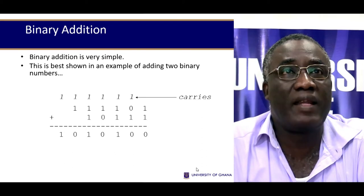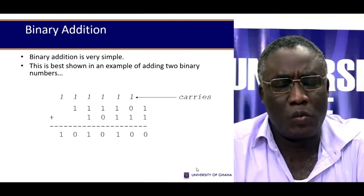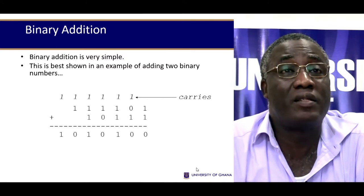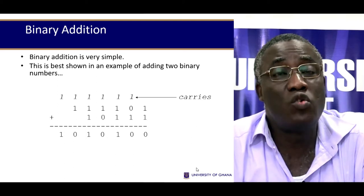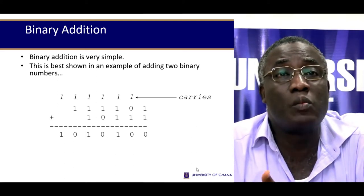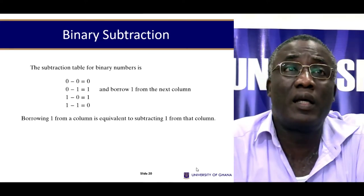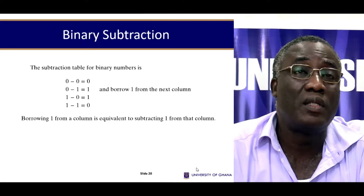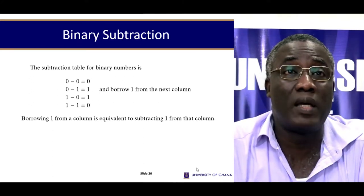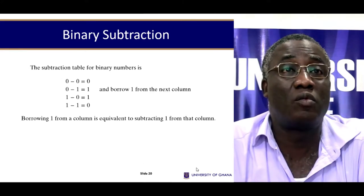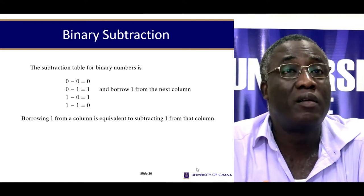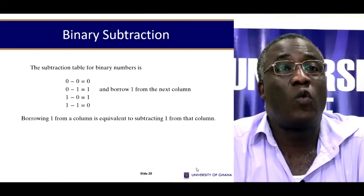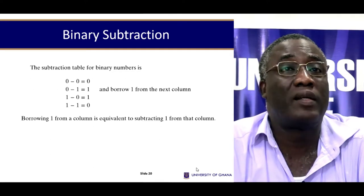This is how binary addition works — and it's important because this is exactly how the computer does its own additions. To program a computer and understand what it's doing, you need to understand the language it speaks. Subtraction is quite similar: 0 minus 0 is 0; 0 minus 1 is 1 with a borrow from the next column, because you can't do 0 minus 1 directly — borrowing gives you 10, and 10 minus 1 is 1; 1 minus 0 is 1; and 1 minus 1 is 0.